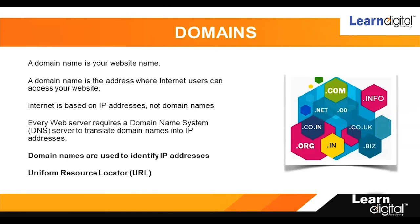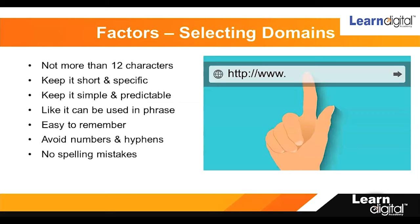Before selecting your domain name, keep some points in mind. You should not select more than 12 characters — the ideal character limit is 12. Although you can go beyond 12, selecting a short name makes it very easy for people to remember your website. Keep your domain name short, specific, simple, and predictable so people can remember it easily.